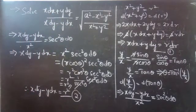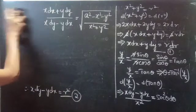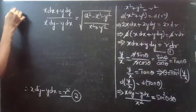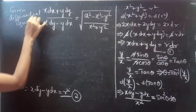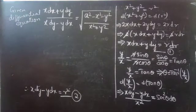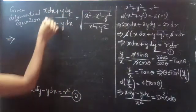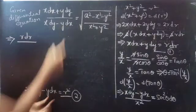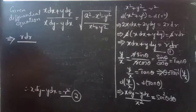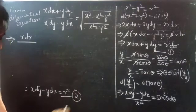Now we take the given differential equation and convert it into polar form. From equation 1, x dx + y dy = r dr, so the numerator becomes r dr. From equation 2, x dy − y dx = r² dθ, so the denominator becomes r² dθ.